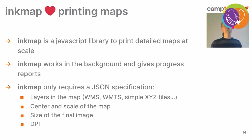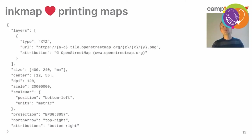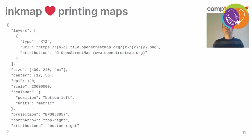Inkmap only requires as input a JSON document — a specification of what you want in your map. It's pretty simple: you provide the layers, the center and scale of the map, the size of the final image, and the DPI. You can see an example JSON document here. Layers have a type — it can be XYZ for tiles, WMS, or WMTS. The size is specified in real-world units such as millimeters. Center is longitude and latitude. You can also specify a scale bar, custom projections, north arrow, and attributions.